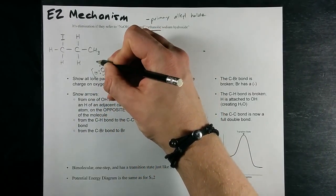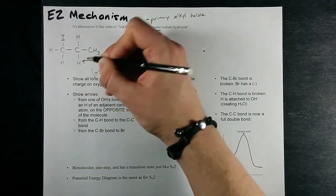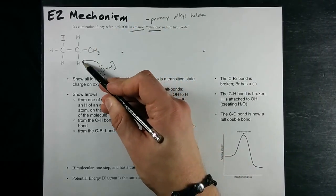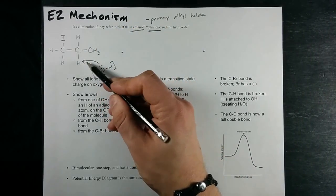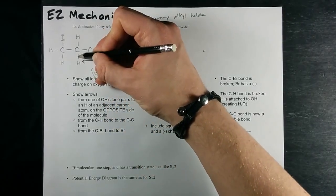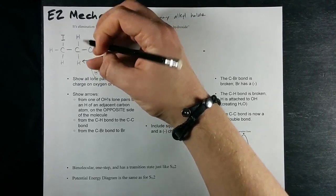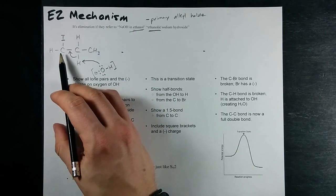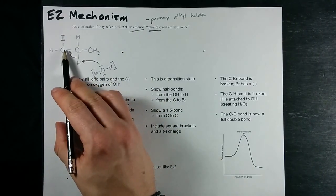My nucleophile is going to attack that hydrogen. The lone pair from my nucleophile will attach to it. It's a very Lewis acid-base reaction happening there. And the electron pair that holds that hydrogen to the carbon will flow into a pi bond between these two carbon atoms.